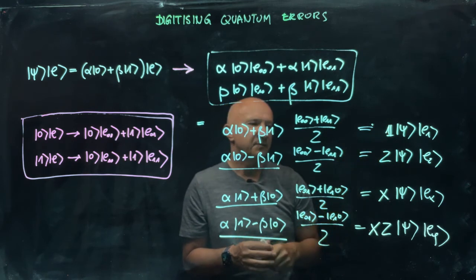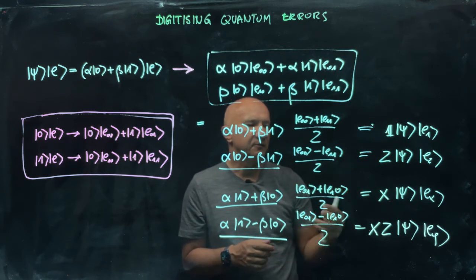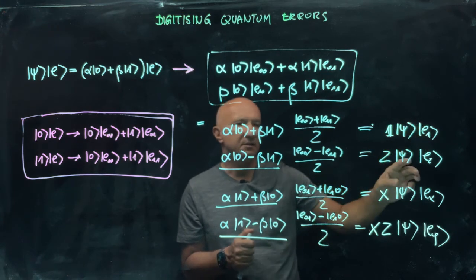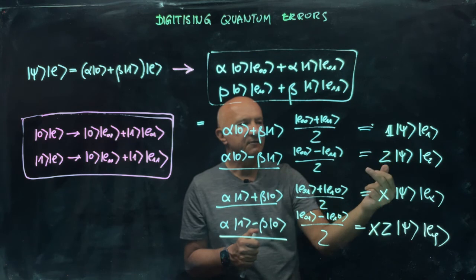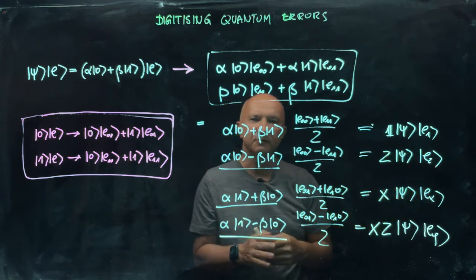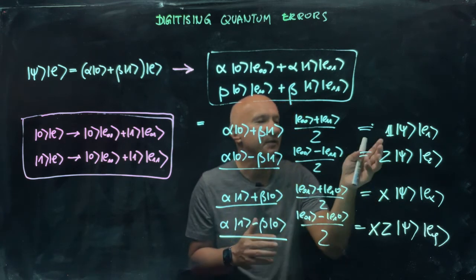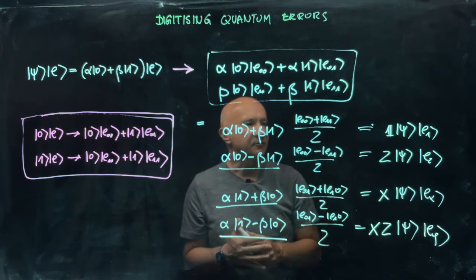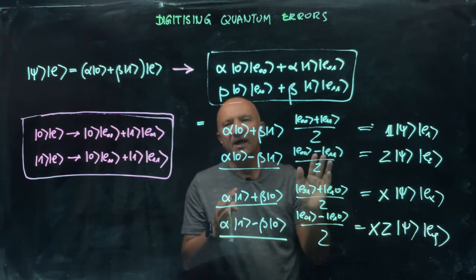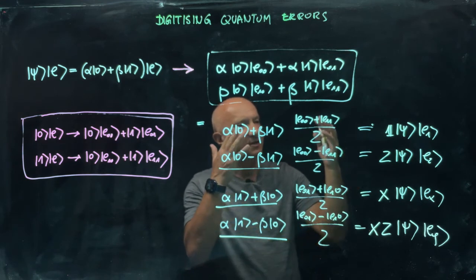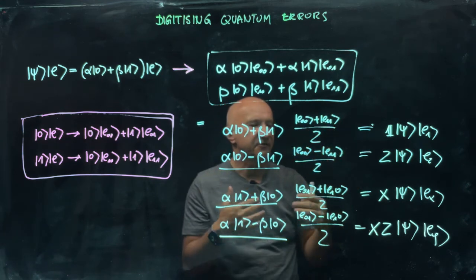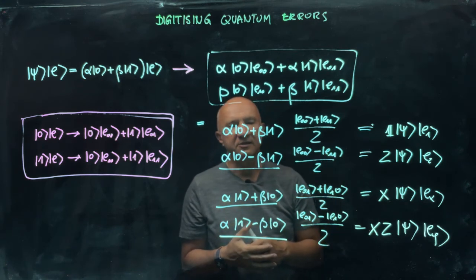One has to be careful when you say that one of four things can happen to the qubit: nothing, phase flip error, bit flip error, or both. Simply because sometimes you may not be able to distinguish between the Z flip error or X flip error. If those two states of the environment are not orthogonal to each other, the environment doesn't know which one happened or doesn't know exactly whether it was a bit flip error or the phase flip error. But to a large extent, this interpretation of having Z errors, X errors, or nothing, or both, is just fine.